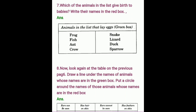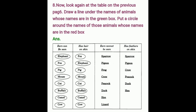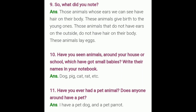Now look again at the table on the previous page. Draw a line under the names of animals whose names are in the green box. Put a circle around the names of those animals whose names are in the red box. So those in the red box — circle them; those in the green box — underline them. Complete this work and find out the animals.